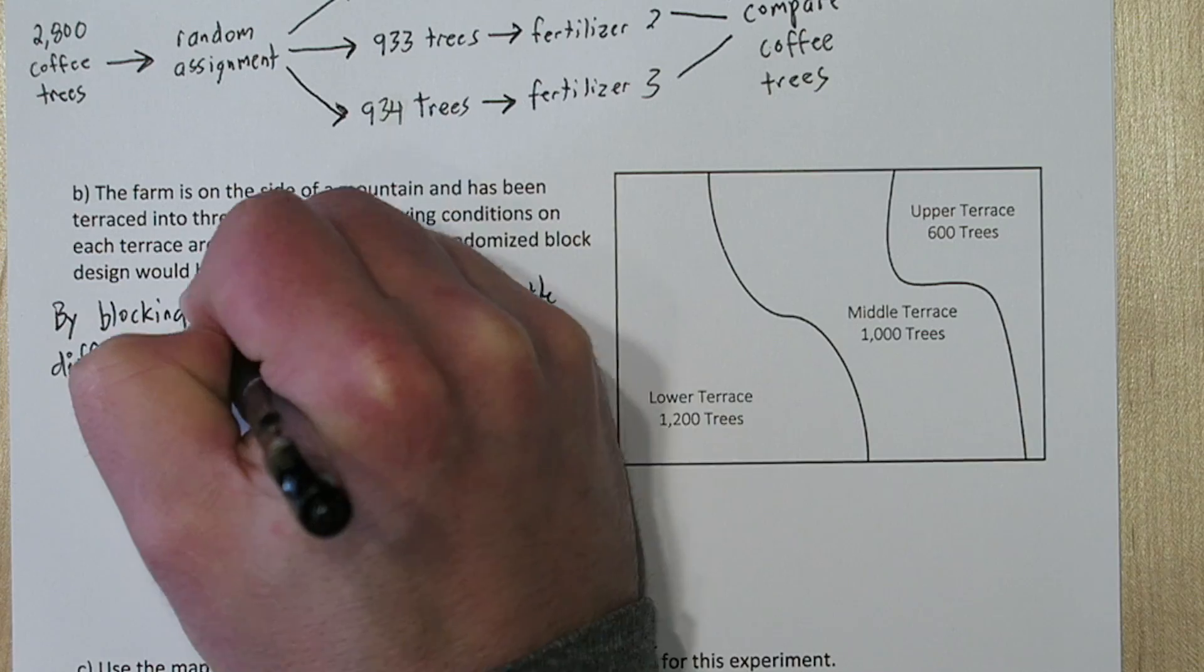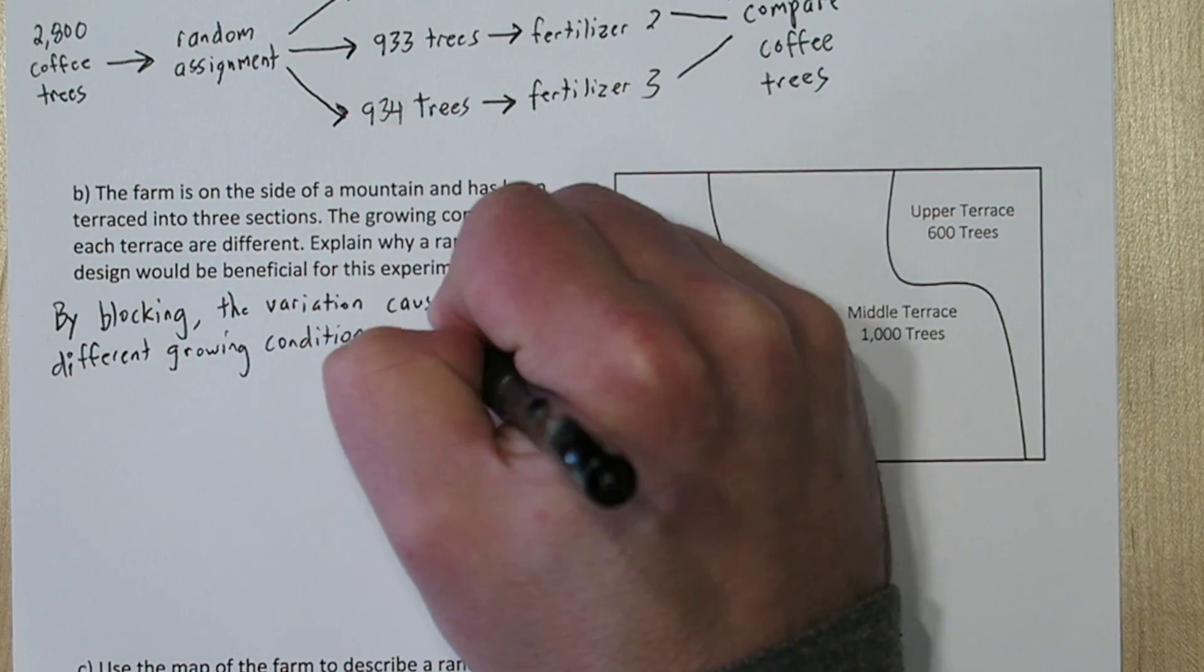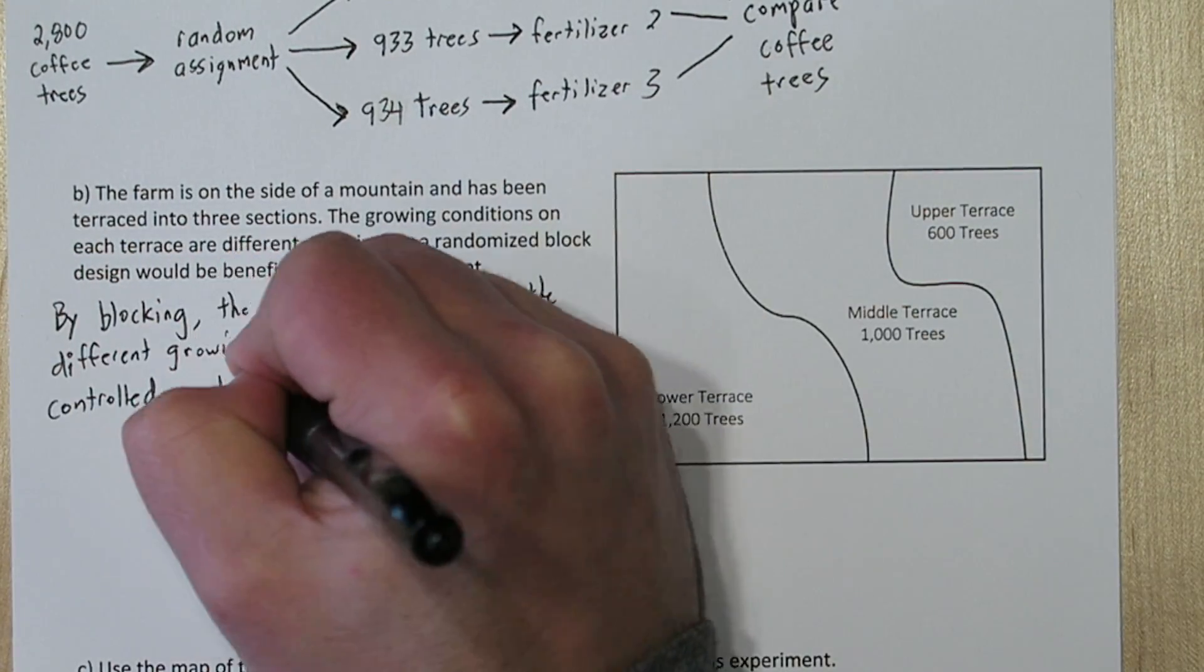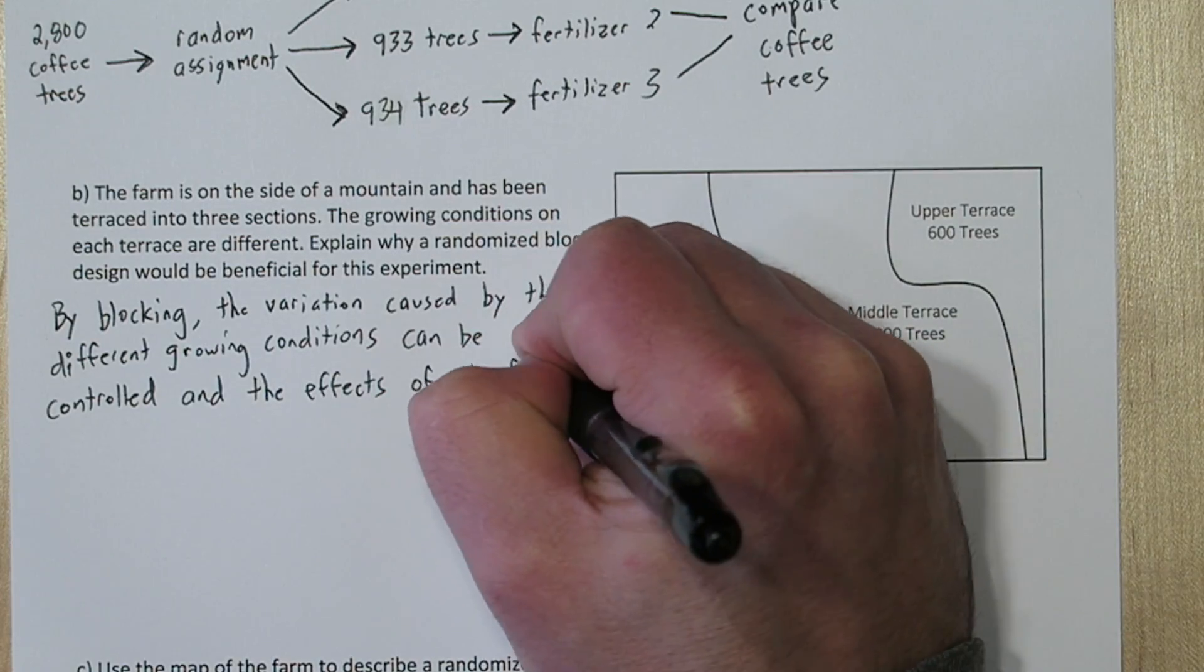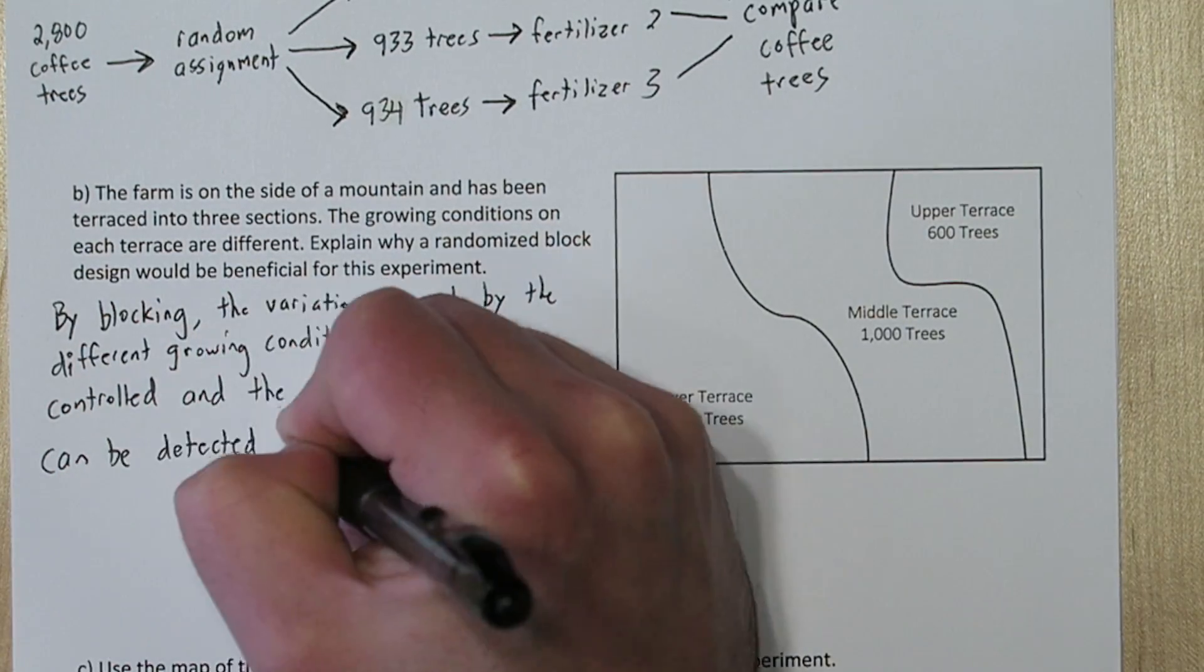So by blocking, the variation caused by the different growing conditions can be controlled, and the effects of the fertilizers can be detected with more precision.